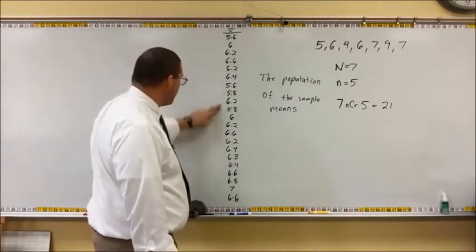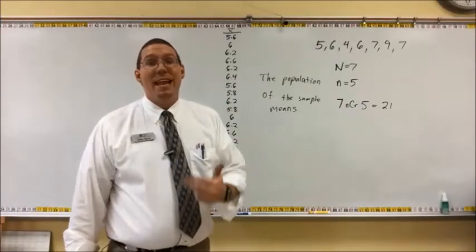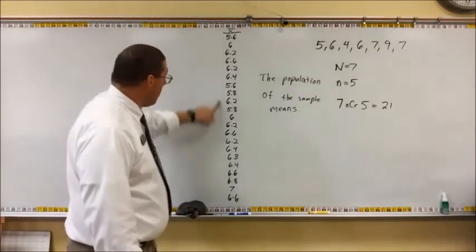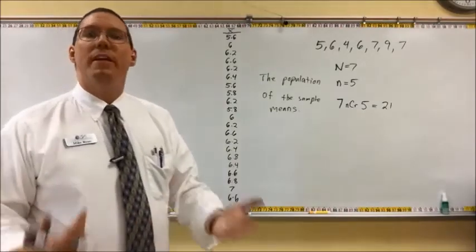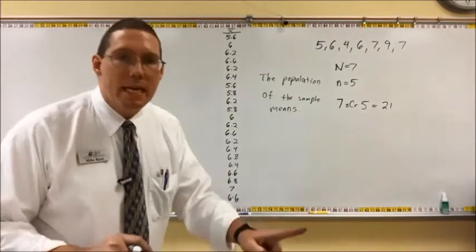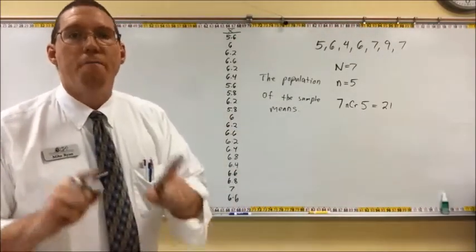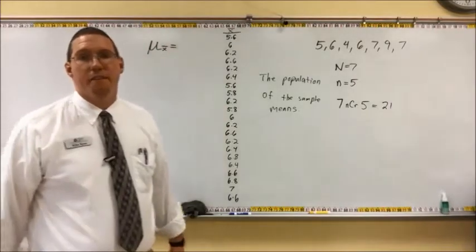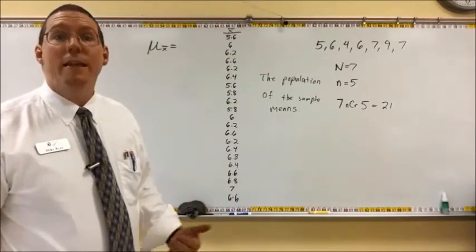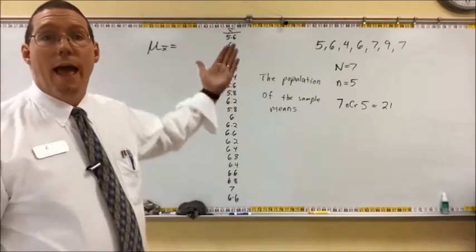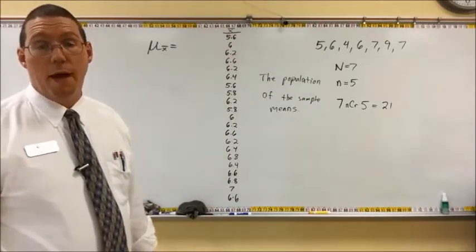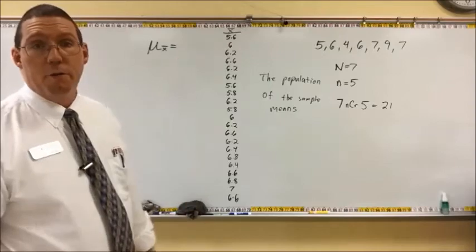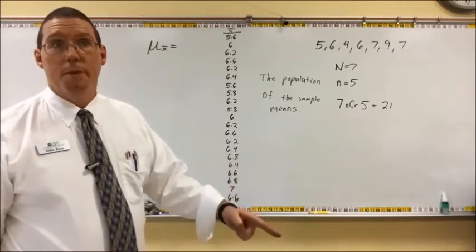Because this is now a population, it has its own mean — its own average value. We could add up all 21 of these numbers, divide by 21, and that would give us a population mean. It would be the mean of the population of possible sample means. What we call that is mu sub x-bar, which is also called the expected value of m — the expected value of the mean. It is the average mean value. Pause the video, add up these 21 numbers, divide by 21, and identify the expected value of m — the mean of the means, the population mean of the sample means.